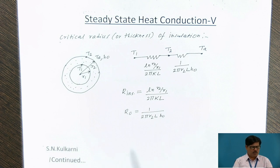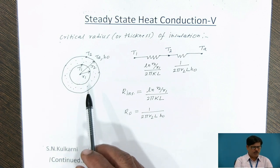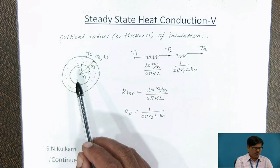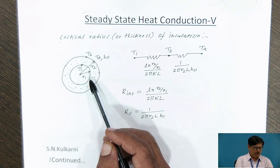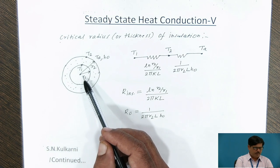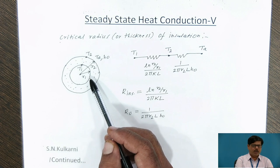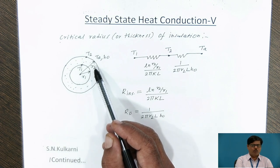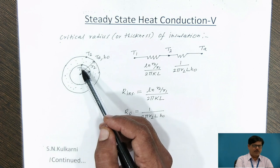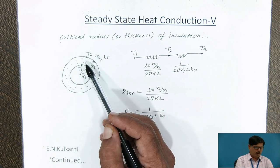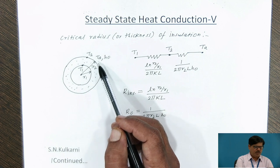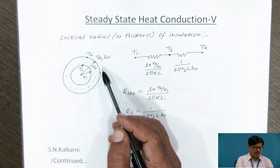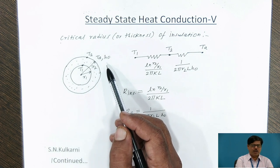For understanding the critical radius of insulation concept, we will consider one cylinder which is made up of an insulating material. For this cylinder, the inner radius of cylinder is R1, which can be an outer radius of conducting tube, and R2 is the outer radius of insulation. Let us consider T1 and T2 are inner and outer surfaces of this insulating cylinder. TA is the surrounding air temperature, and HO is the heat transfer coefficient.